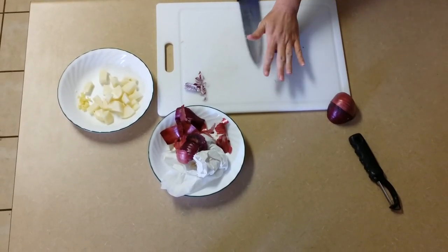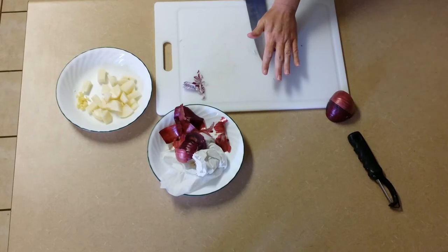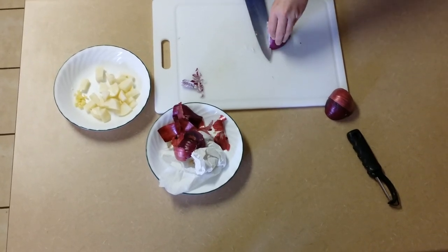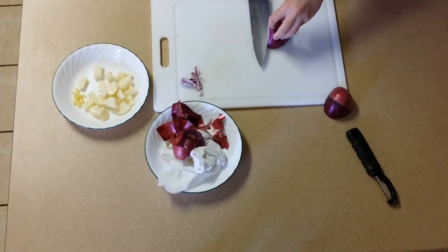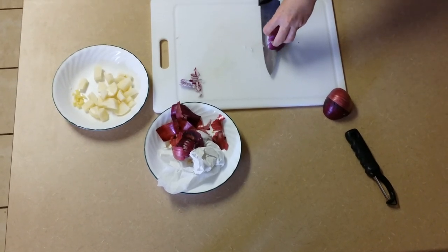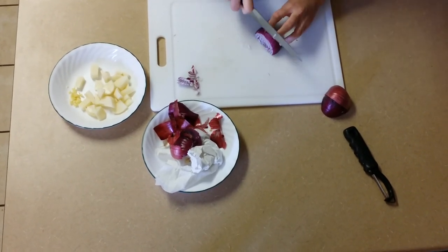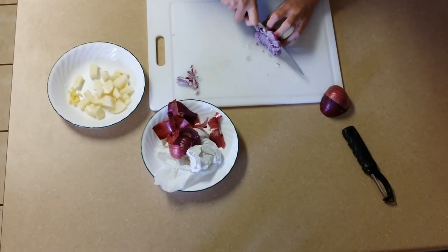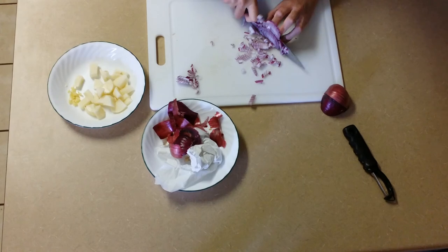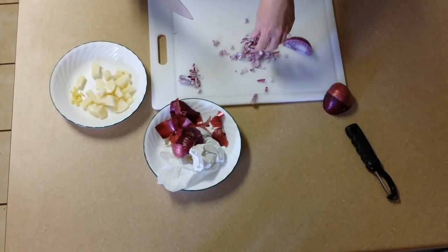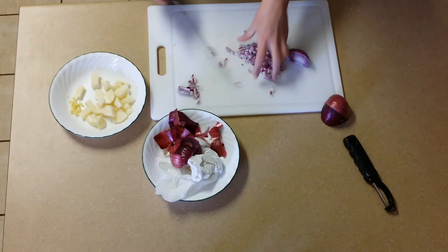And I go almost to the root. I am not going all the way back. And I do it again on the top. Then all I have to do is run my knife all the way down and I am getting beautiful diced onion. And there you go.